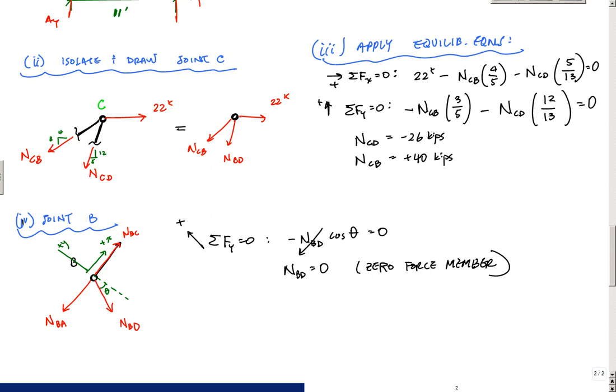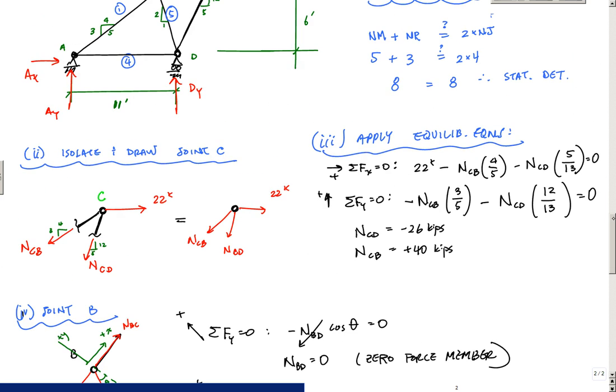So if I do sum of the forces in the X now, that's simply going to tell me here that this is positive right here. It's just going to tell me that NBC equals NBA. And so here, that's going to be, that means all of this is also plus 40 kips. So NBA is also plus 40 kips. Then I will have, and I know NBD is zero.